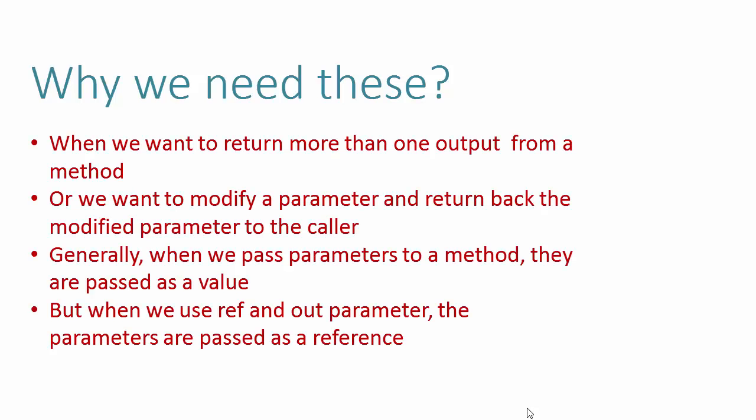Why do we need ref and out parameters? We need them when we want to return more than one output from a method. Methods have a return type so we can get one value, but if we want additional values returned, or if we want to modify a parameter inside the method and return that modified value back to the caller, we use ref and out.